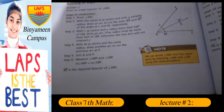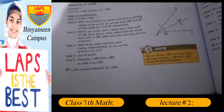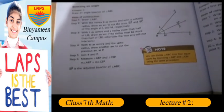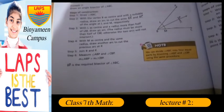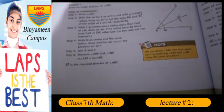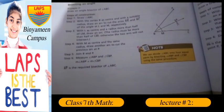Step 6: Measure angle ABP and angle CBP. Measure angle ABP equals measure angle CBP. BP is the required bisector of angle ABC.